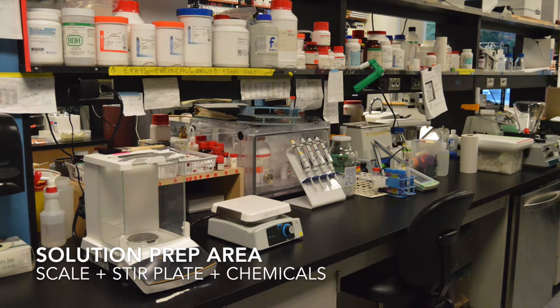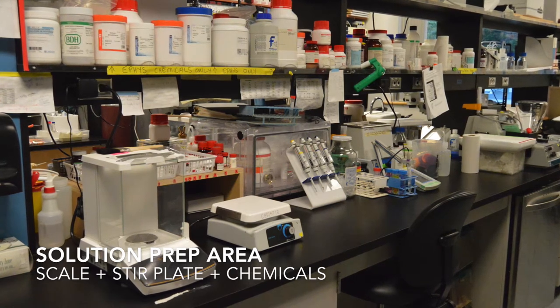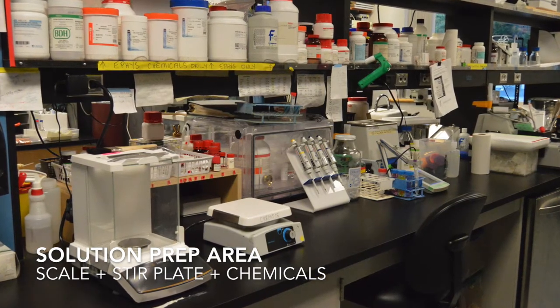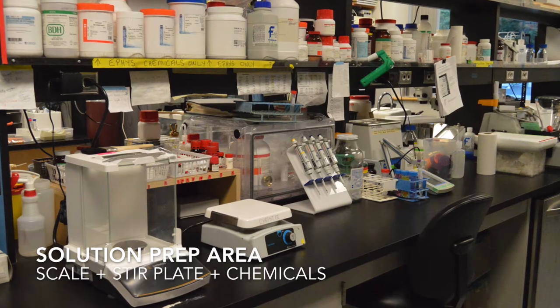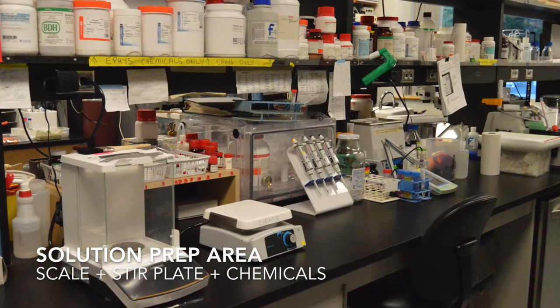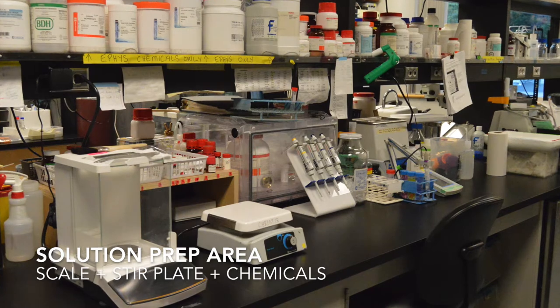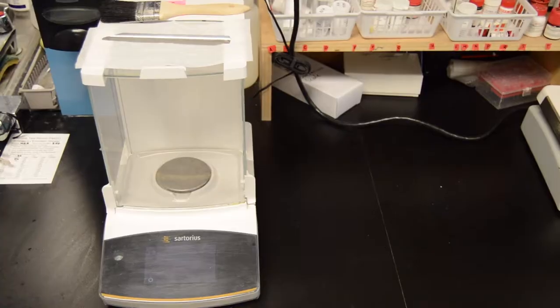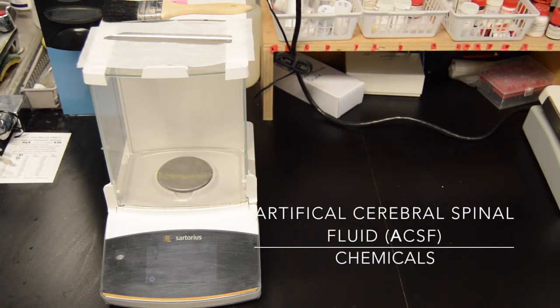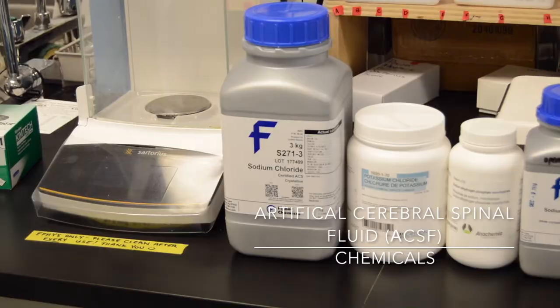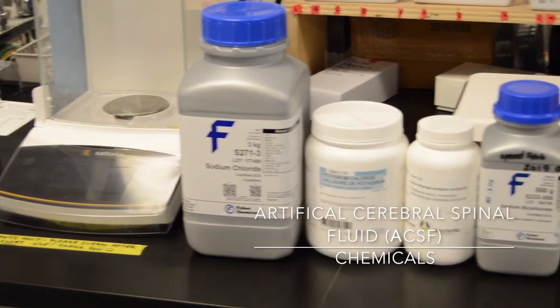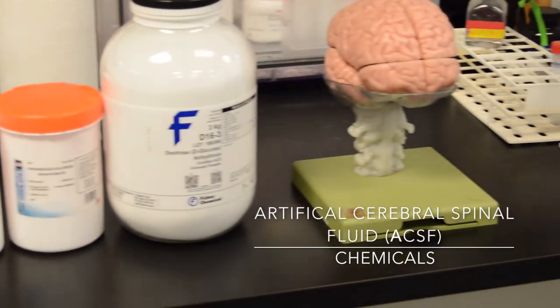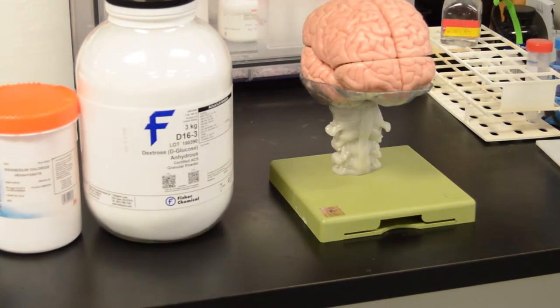The first step in any electrophysiological experiment is the solution prep. In our laboratory, we have a designated electrophysiology aisle where you will find all of the components required, including a scale, a stir plate, and all of the chemicals. Here, we will prepare different solutions that will be used through the entirety of the experiment. The first two solutions we will make are regular artificial cerebrospinal fluid, or ACSF for short, and also sucrose ACSF.